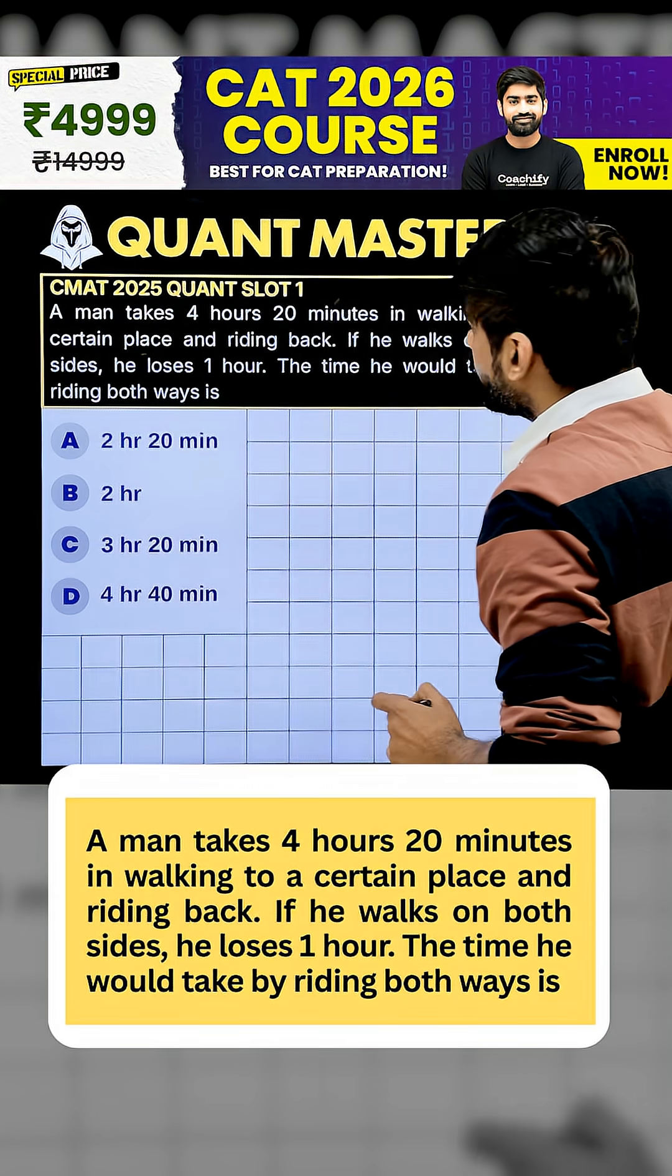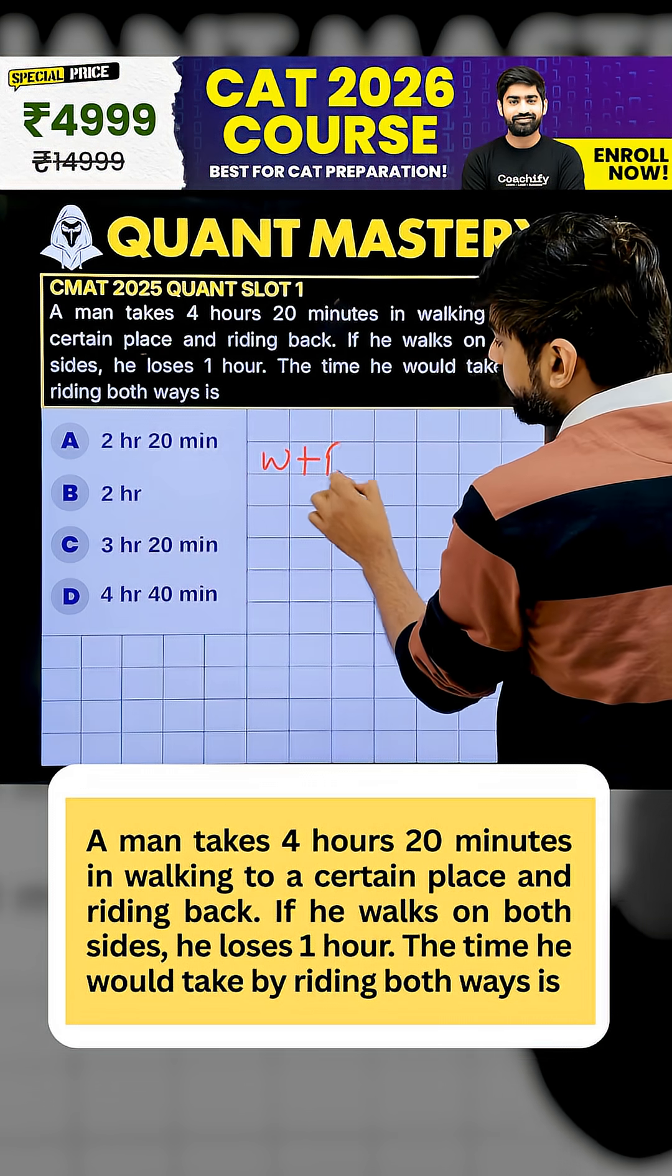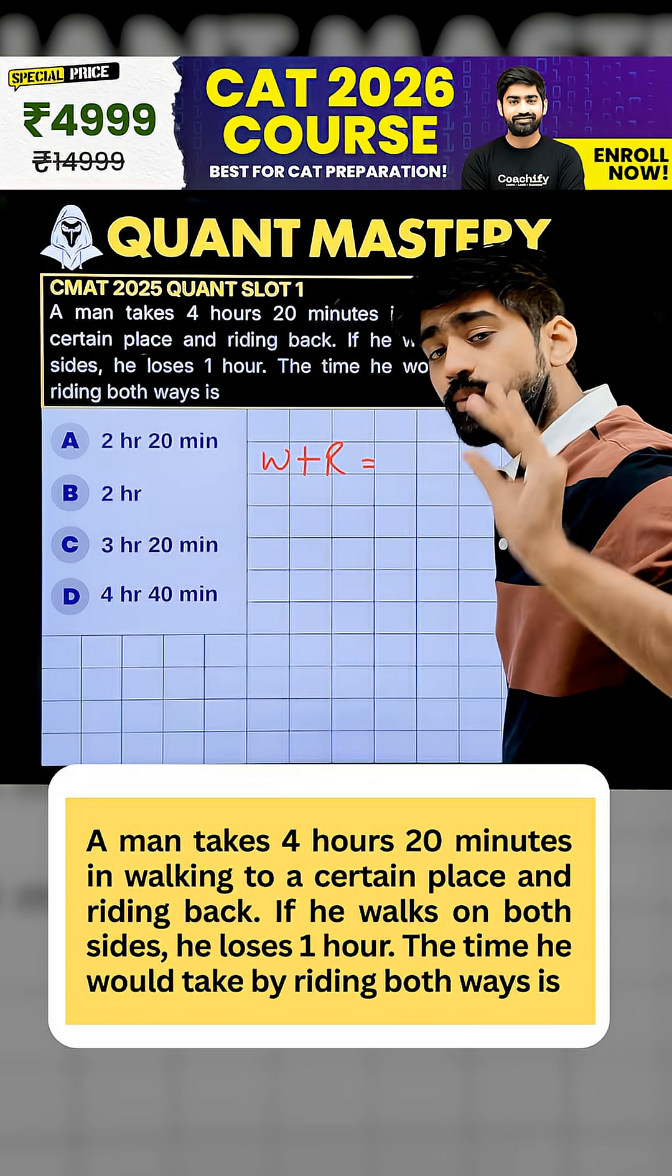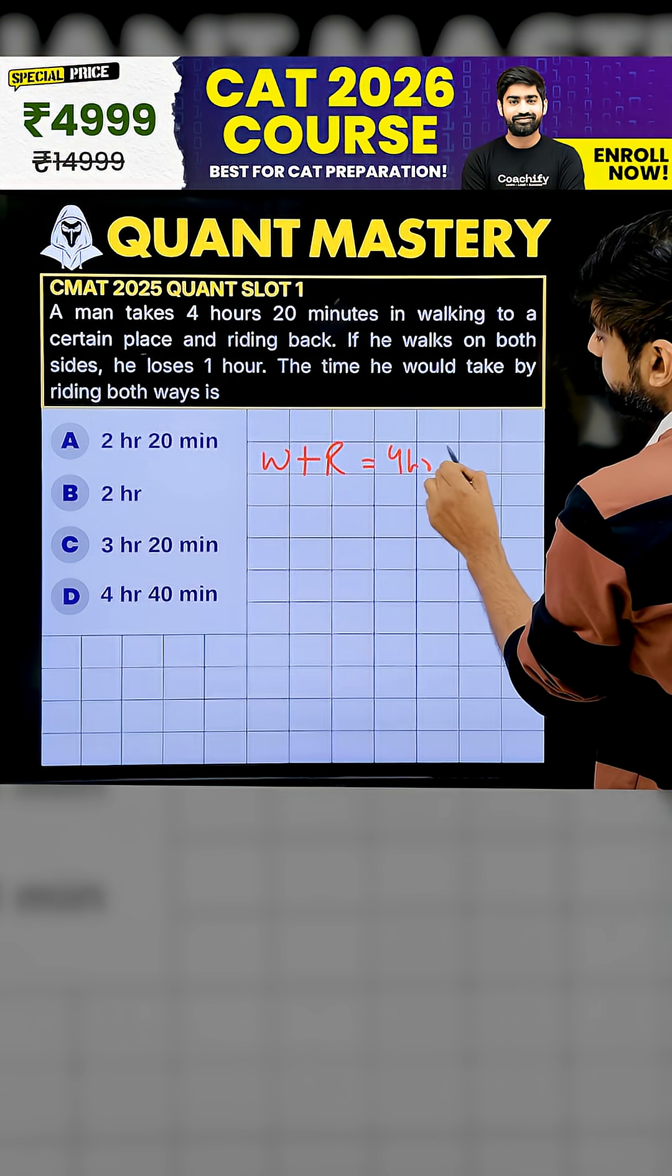A man takes 4 hours 20 minutes in walking to a certain place and riding back. Walking and riding, in both cases, the total duration is 4 hours 20 minutes. Okay, let's write it.